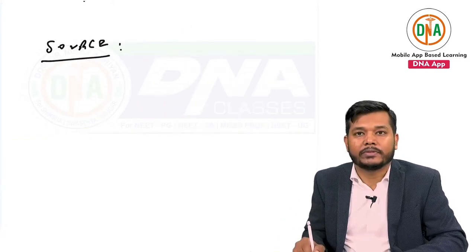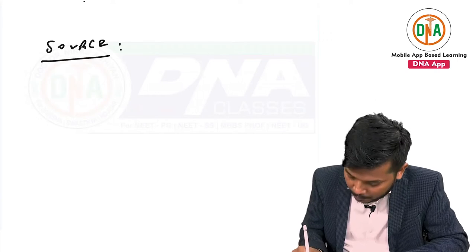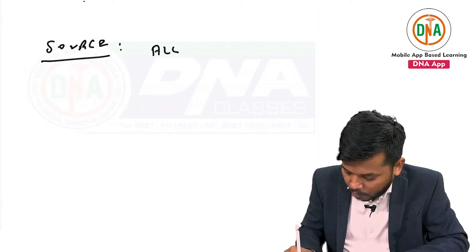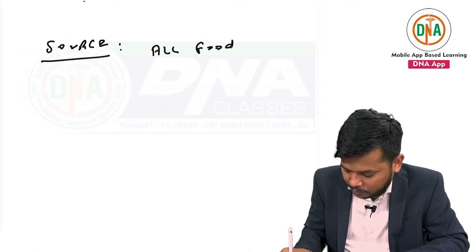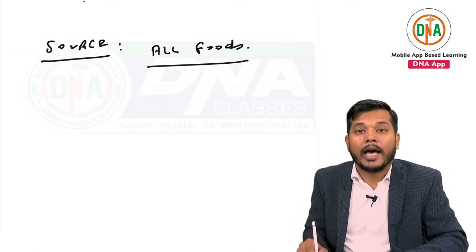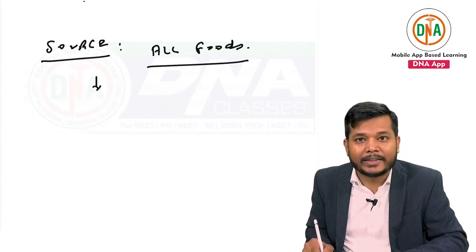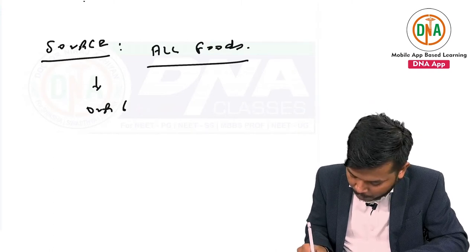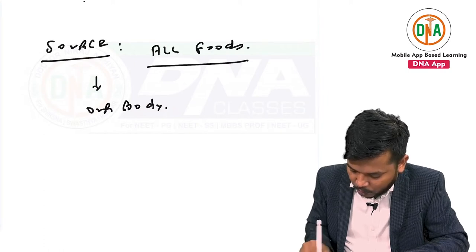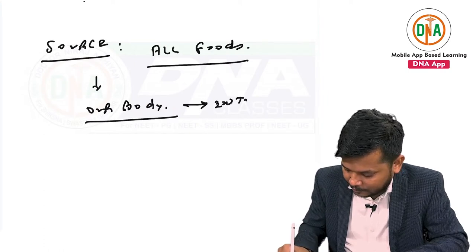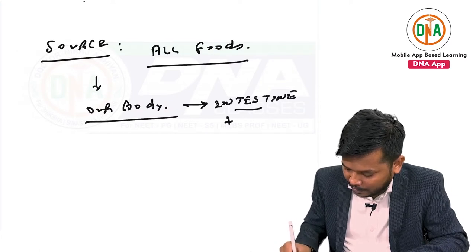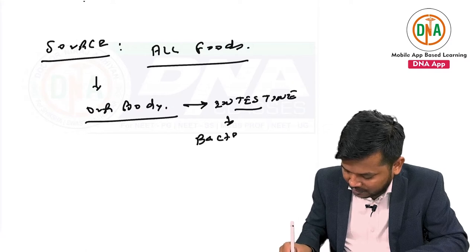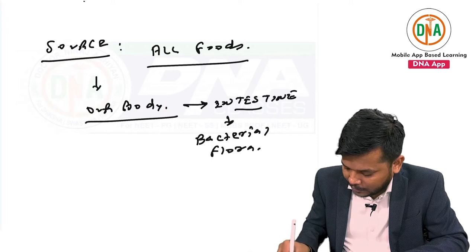Sources of vitamin B5, that is pantothenic acid, include all foods. Remember, pantothenic acid is also synthesized in our body — in the intestine, by the bacterial flora present in the intestine.